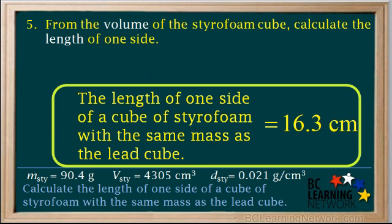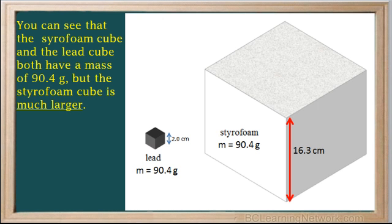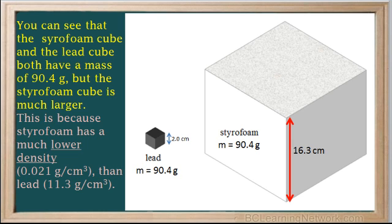So the final answer to the question is: the length of one side of a cube of styrofoam with the same mass as the lead cube is 16.3 centimeters. You can see that the styrofoam cube and the lead cube both have a mass of 90.4 grams, but the styrofoam cube is much larger. This is because styrofoam has a much lower density at 0.021 grams per centimeter cubed than lead does at 11.3 grams per centimeter cubed.